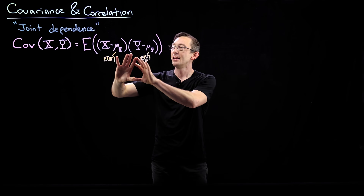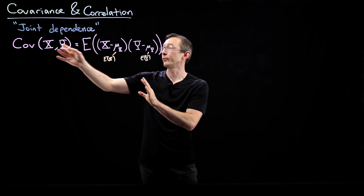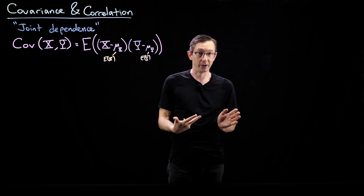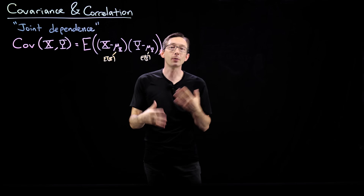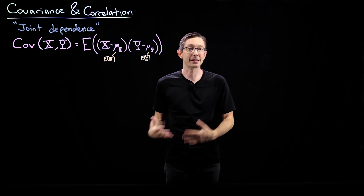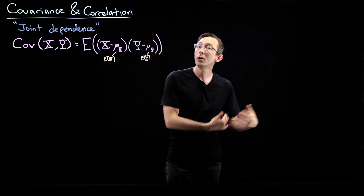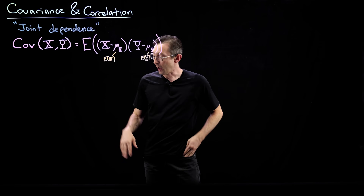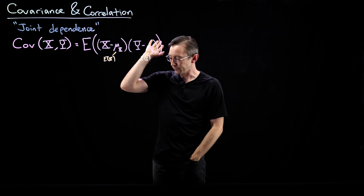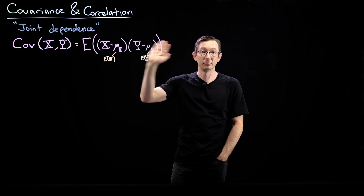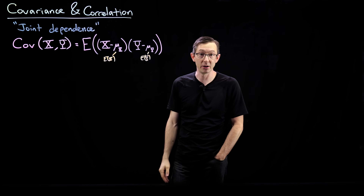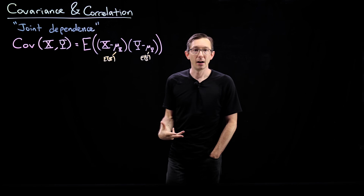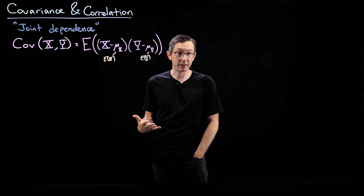This is very close to the definition we're familiar with of the regular variance of a single random variable. This is how two random variables x and y co-vary — the covariance of those two random variables. It's a pretty simple thing to compute, work with, analyze, and understand. It's an intuitive notion.